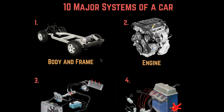To start off, let's start with number one: the body and frame. The frame is a strong metal structure that provides a mounting place for parts to be added to the vehicle. The body can be steel, aluminum, fiberglass, plastic, or a composite skin that makes up the exterior of a car.